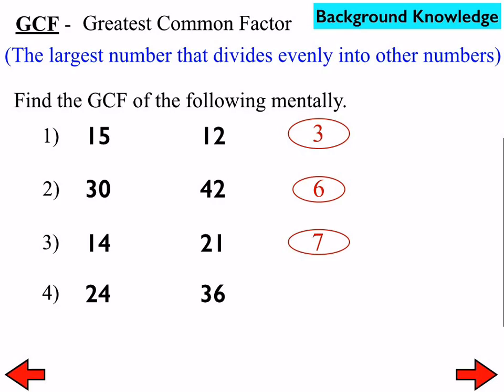I heard a few of you say 6, and that's going to be an issue today. We need to make sure we find not just a common factor, but the greatest common factor, which should be 12 there. And between 50 and 15, tell me, please. It is 5.